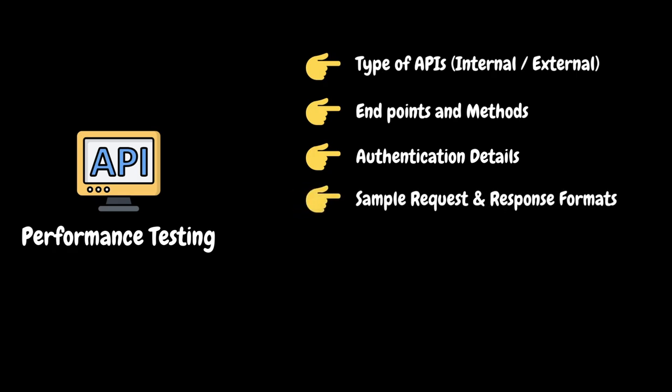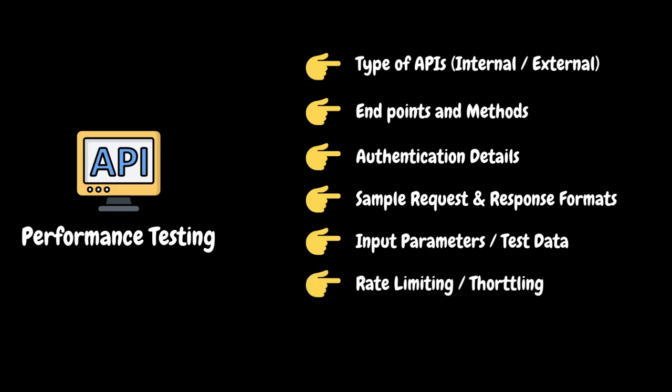Understand the expected request and response formats including supported data formats like JSON or XML, headers, and any required or optional parameters — this is crucial for creating realistic test scenarios. Gather appropriate test data that simulates real-world scenarios, including data for various API endpoints, different input values, and conditions the APIs are expected to handle during normal operation. Rate limiting and throttling control the amount and speed of incoming requests to the API, preventing misuse and ensuring fair usage. Check for any rate limiting or throttling mechanisms and understand the limits imposed on the number of requests within a specific time frame. Also gather peak usage metrics and acceptable response time SLAs for the identified APIs.